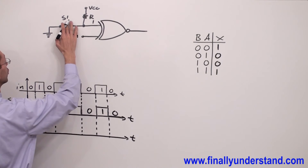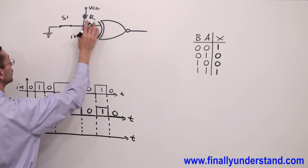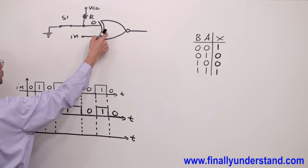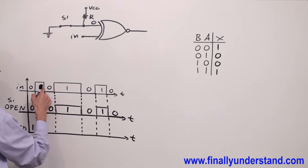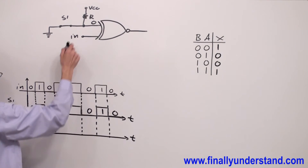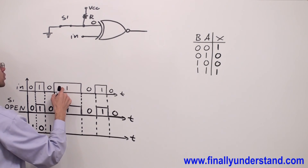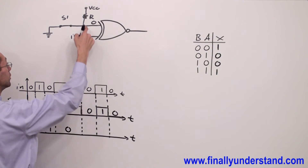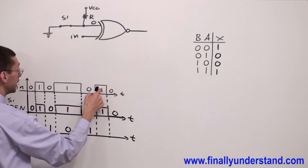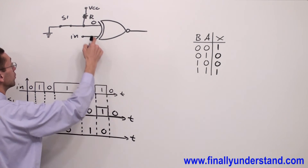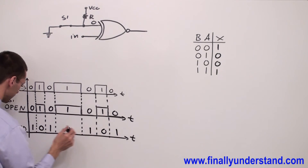Let's take a look at what will happen if we are going to close the switch. If you close the switch, you are going to short the circuit to the ground, that's why you are going to have logic 0 at first input. Let's perform the analysis: 0 exclusive NOR 0 gives me 1, 1 exclusive NOR 0 gives me 0, 0 exclusive NOR 0 gives me 1, 1 exclusive NOR 0 gives me 0, 0 exclusive NOR 0 gives me 1, 1 exclusive NOR 0 gives me 0, 0 exclusive NOR 0 gives me 1. Let's draw the waveform.